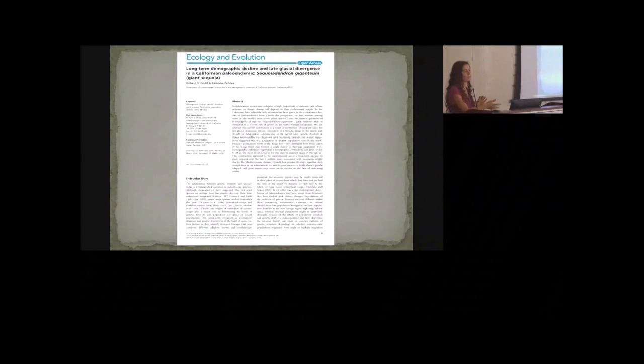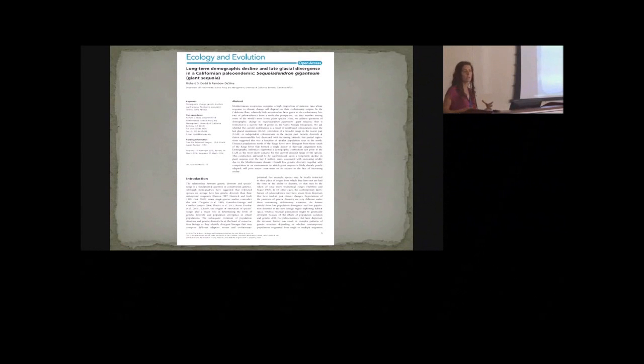Some of our previous work confirmed these results about how the northern range operates differently than the southern range. We also found evidence of a long-term decline in giant sequoia with the glacial cycles, which has likely resulted in fragmentation of the range. The range was once more continuous, but has been broken up as populations shrank.